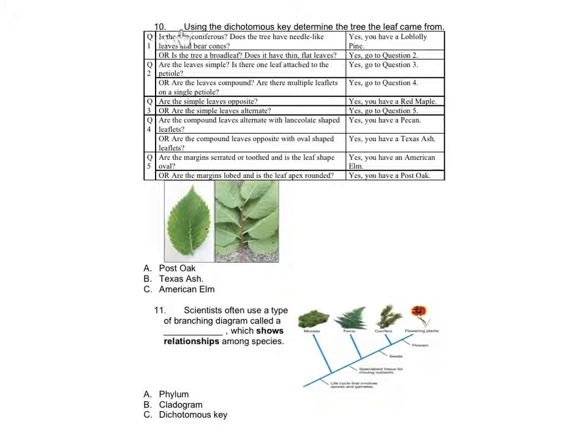Number 10: Using the dichotomous key, determine the tree the leaf came from. Question 1: Is the tree coniferous? Does the tree have needle-like leaves or bare cones? Yes, you have a loblolly pine. Or is the tree a broadleaf? Does it have thin flat leaves? Yes, go to question 2.